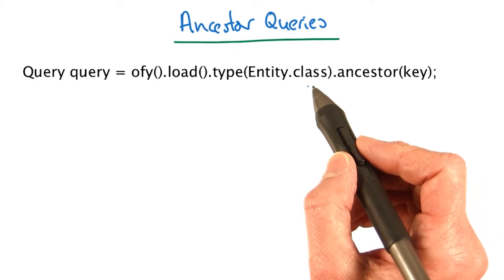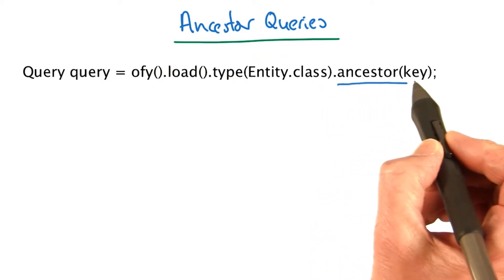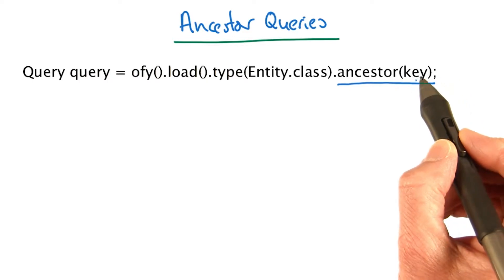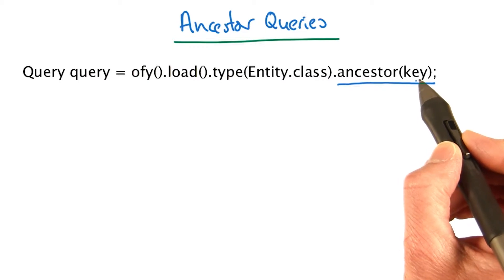Here's how you create a query to get all the entities that have a particular ancestor. You just add the ancestor function to the end of the query creation. And you need to specify the key of the parent, that is the key of the ancestor whose descendants you want to query for.